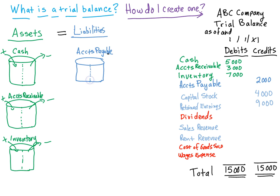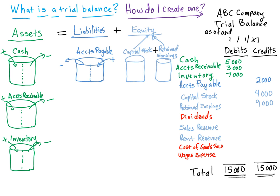Now for the right-hand side of the balance sheet equation: we split the accounts payable bucket in half, but since liabilities are on the right, when we have more accounts payable it comes in on the right, and as we pay off our accounts payable it goes out on the left. Equity is also on the right — so for capital stock, you add on the right and take out on the left. Retained earnings: you add on the right and take out on the left.